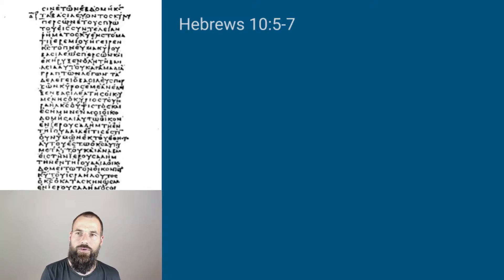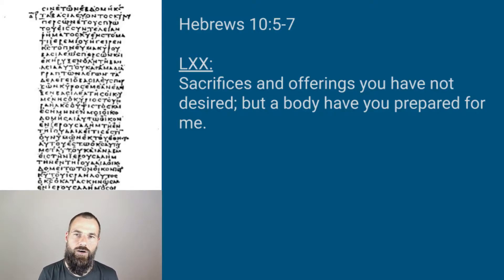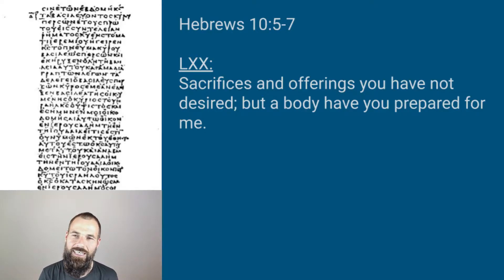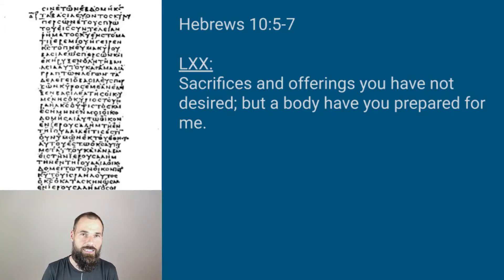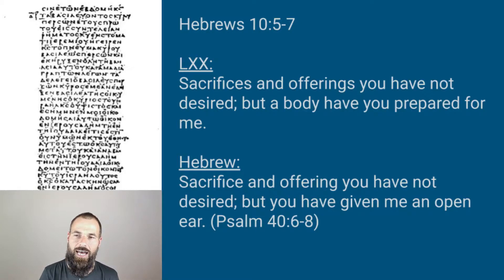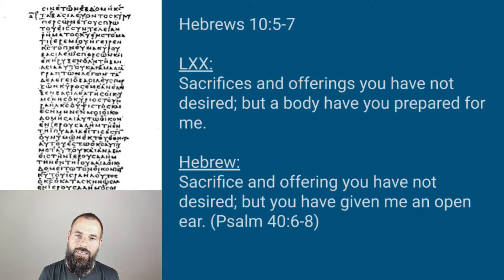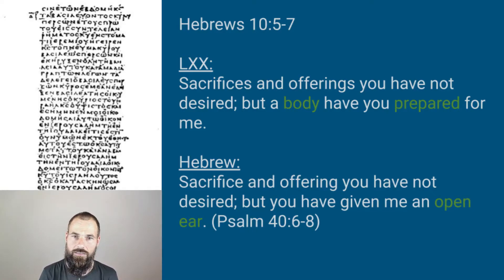One famous example is when the author of the Epistle to the Hebrews, in Hebrews 10:5–7, quotes from Psalm 40:6–8 and says: 'Sacrifices and offerings you have not desired, but a body you have prepared for me.' This is a famous quotation. It comes from the Septuagint and differs from the Hebrew text we find in our Psalm. If you read Psalm 40, you will find: 'Sacrifices and offerings you have not desired, but you have given me an open ear.' In my experience, this is probably the most frequently cited example of this kind of difference — prepared body versus open ear. That's quite a difference.